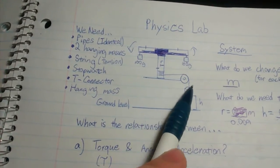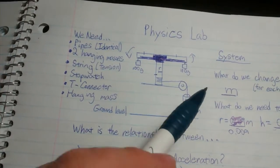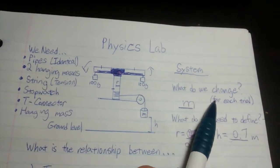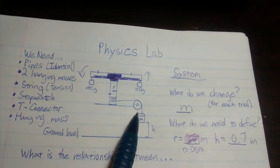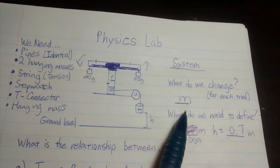Then you have a pulley and a hanging mass with a height. In our system, what do we need to change? We need to change the mass, which is how we'll get different results. And what do we need to define?